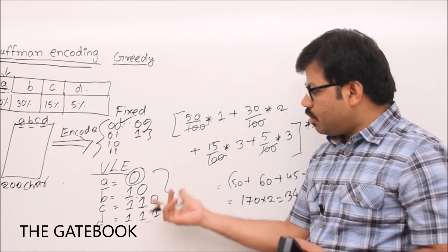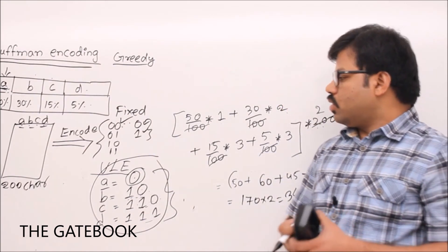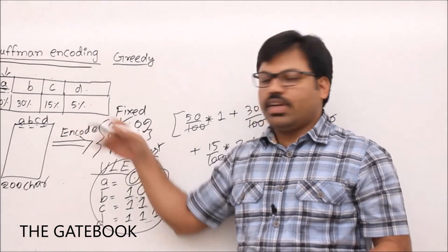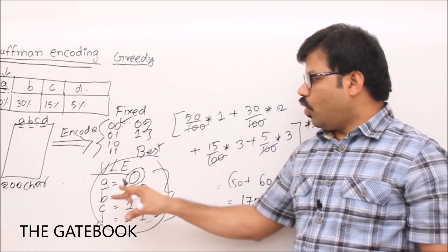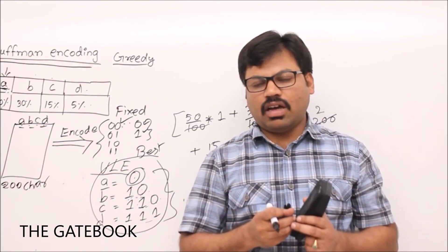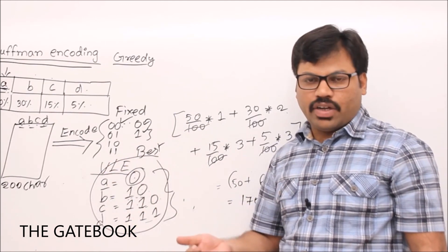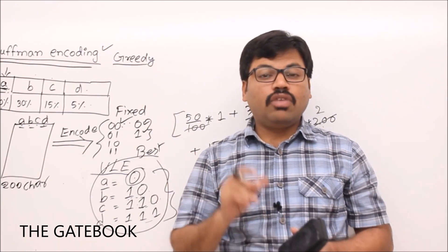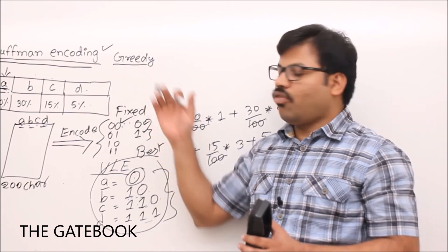Now the question is: is this the best variable-length encoding, or can we do even better? Given a set of characters and their frequencies, how do we find the optimum encoding scheme — one that minimizes the message size? This is the core problem. The solution is Huffman encoding. Huffman proposed an encoding scheme that guarantees the optimum message size, and we will now see how to find that encoding.